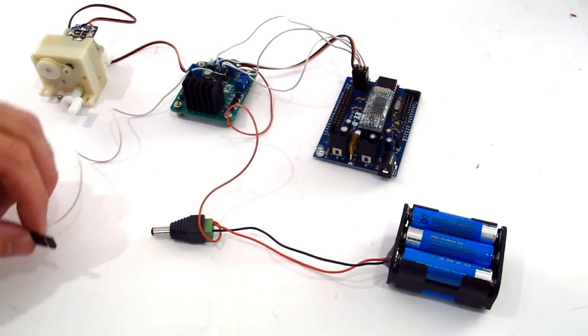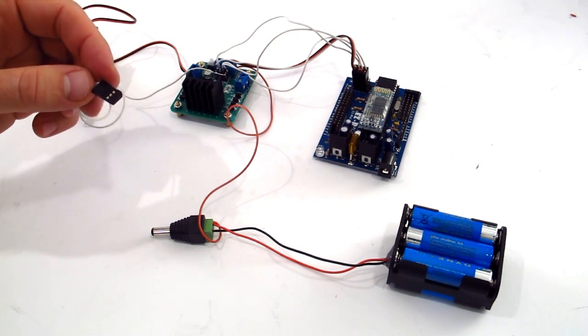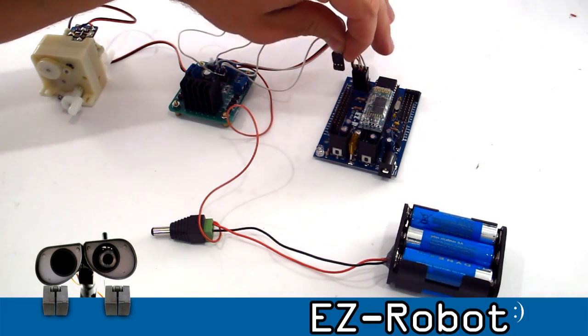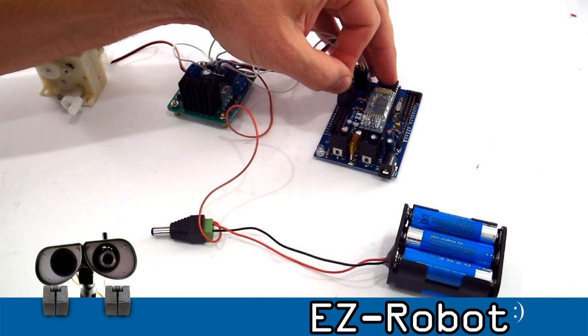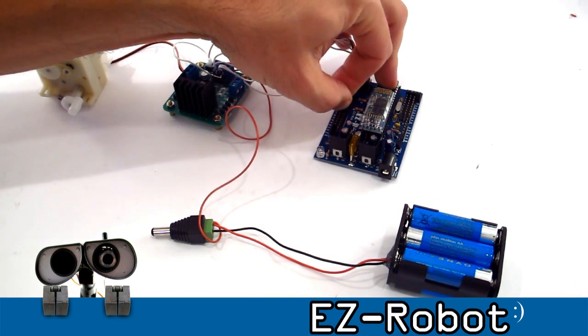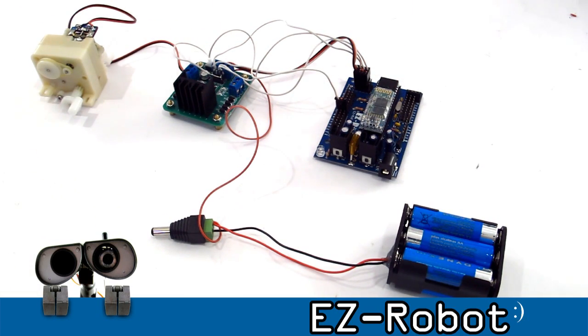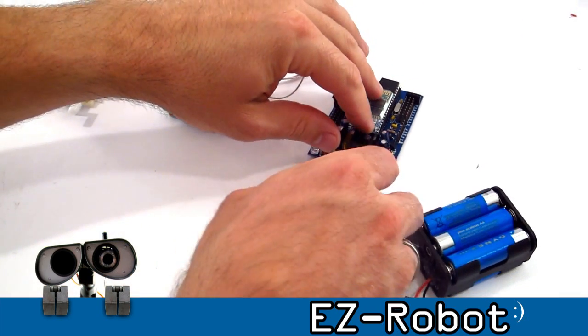For pulse width modulation, which is going to be now speed control for the motors, I'm going to connect that to any of the digital pins. And I'm going to just choose D8. Now I can apply power to the EZB.